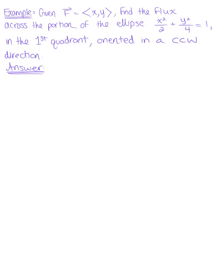Given the vector field F defined by components x, y, find the flux across the portion of the ellipse x²/2 + y²/4 = 1 in the first quadrant, oriented in a counterclockwise direction.